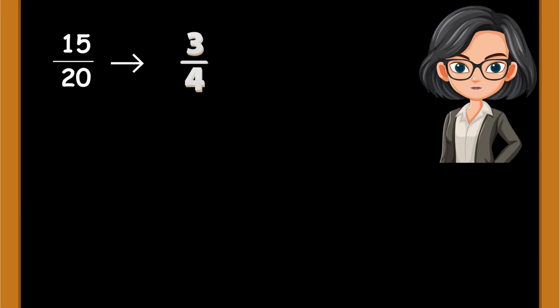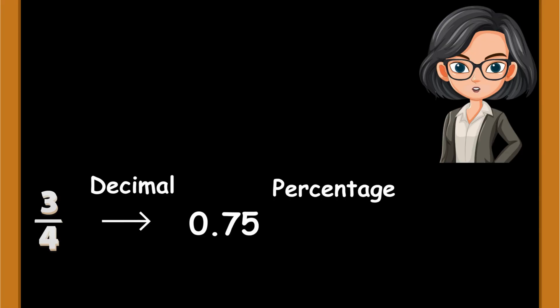15 out of 20 is the same as 3 out of 4, which we write as a fraction, three-quarters. And when we turn that into a decimal, it's 0.75, and as a percentage, that's 75 percent.